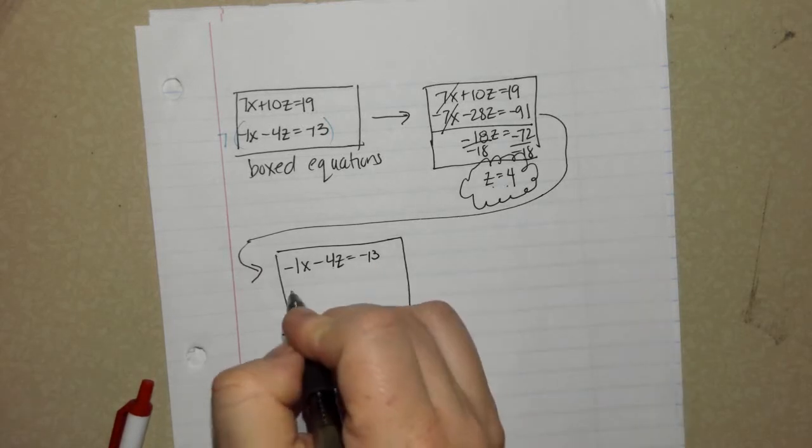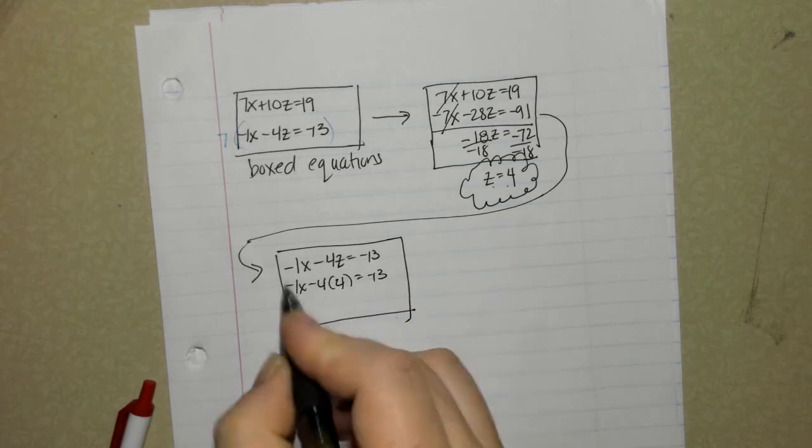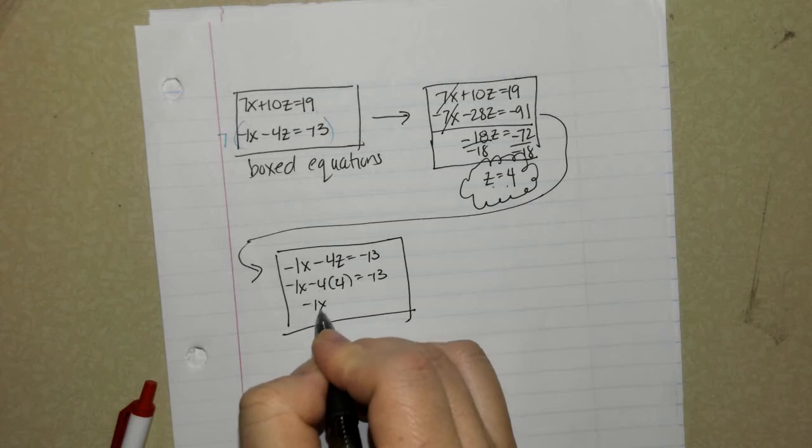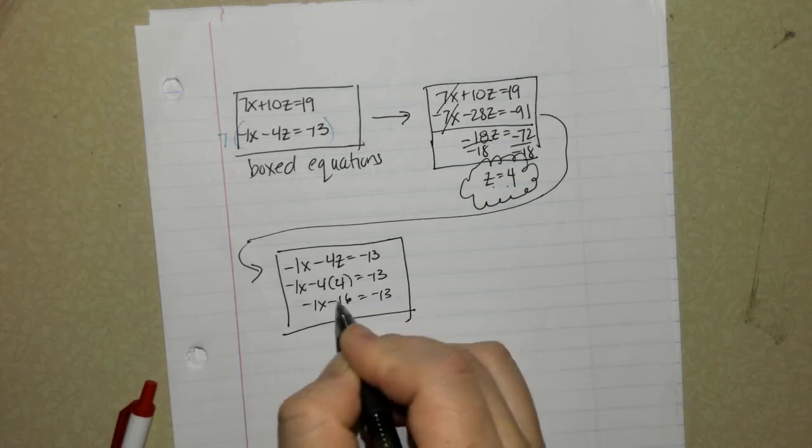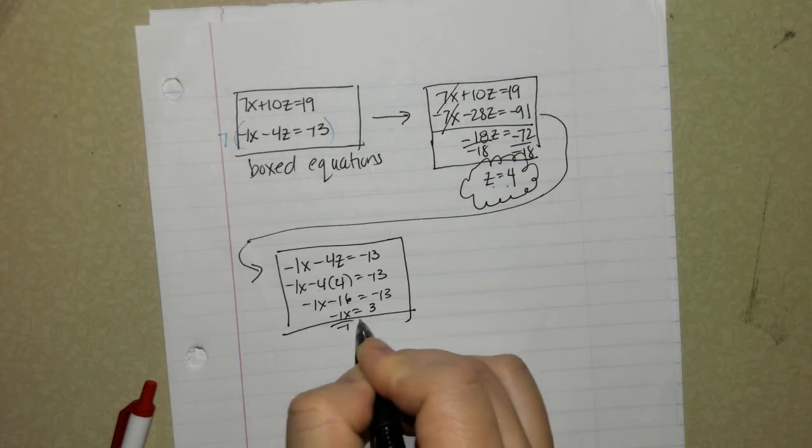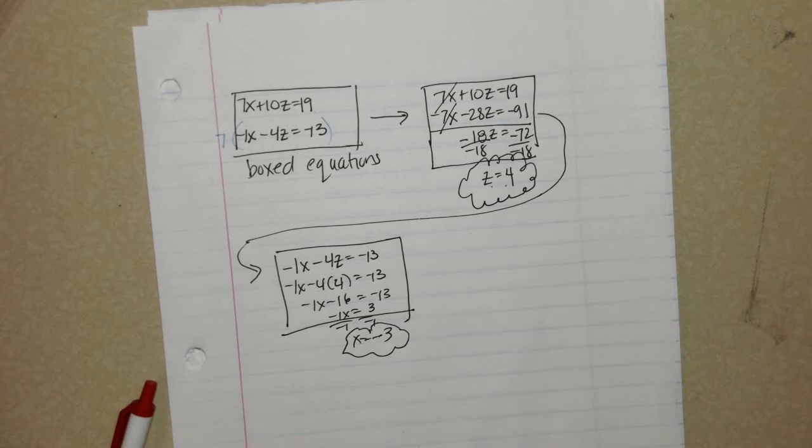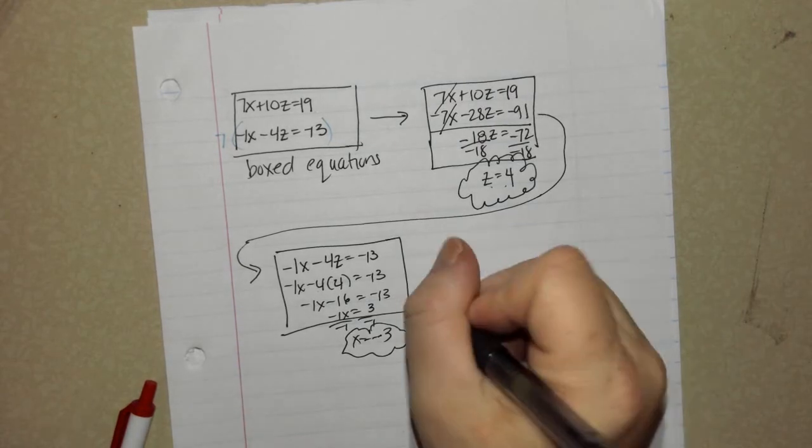So I'm plugging in a 4. Negative 4 times 4 is negative 16. I'm going to add the 16 to the opposite side, equaling a positive 3. Divide by negative 1, and x equals negative 3. I'm going to put like a little cloud around that. So, z is 4, and x is negative 3.